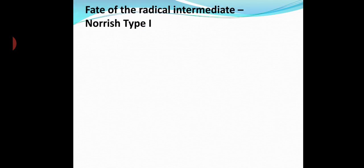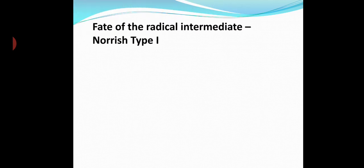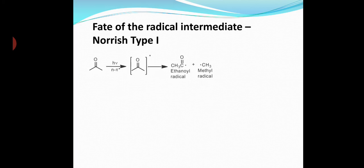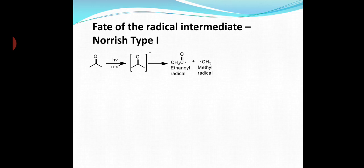Now let's have a look at the fate of the radical intermediates formed during the primary step of Norrish Type 1 reaction. Radicals are very reactive and will undergo subsequent reactions to give neutral molecules in the secondary process. Let's take acetone as an example. Acetone in the presence of light goes to the excited triplet state and undergoes alpha cleavage to give an ethanoyl radical and a methyl radical. This is a Norrish Type 1 fragmentation.